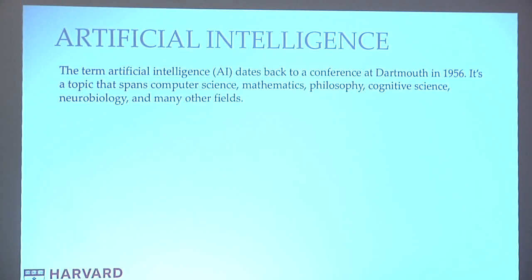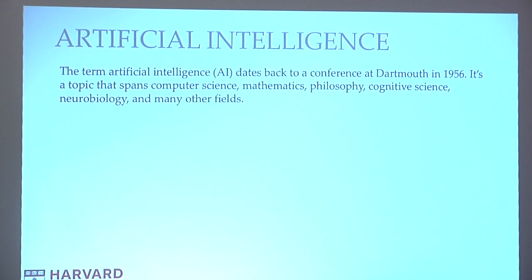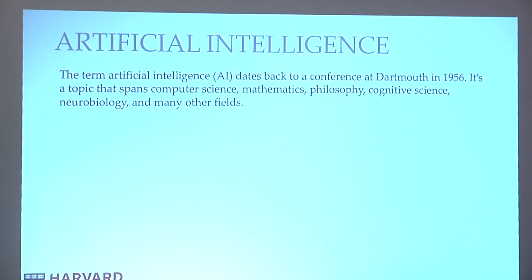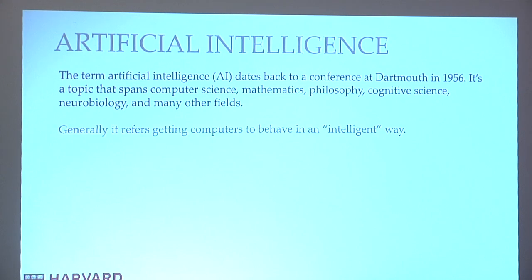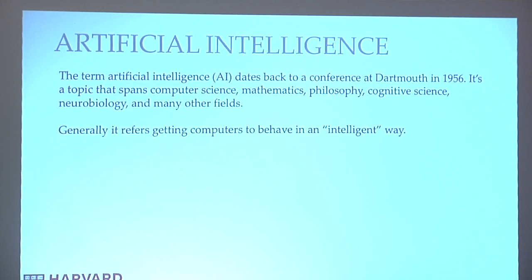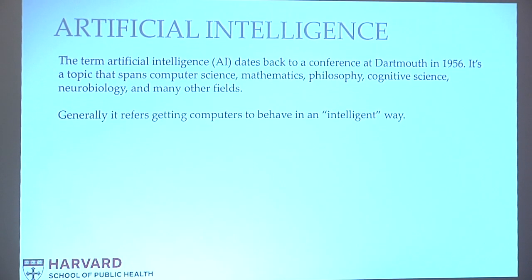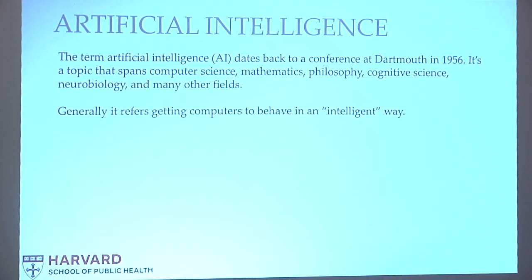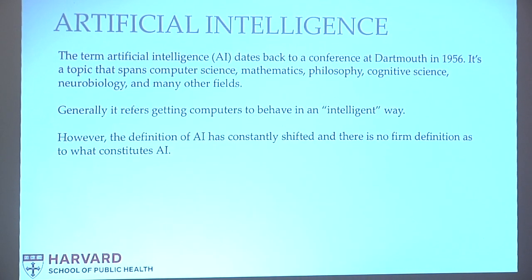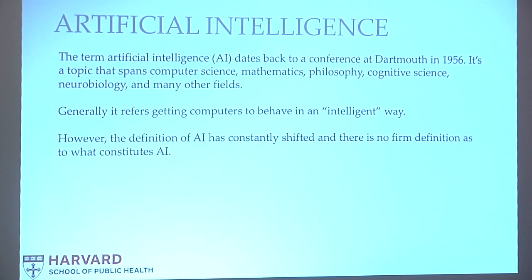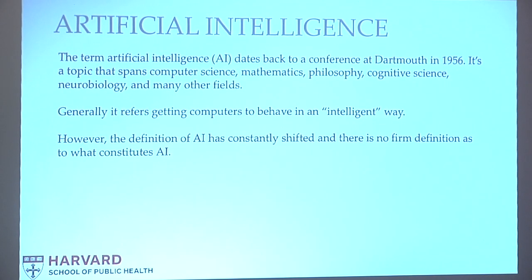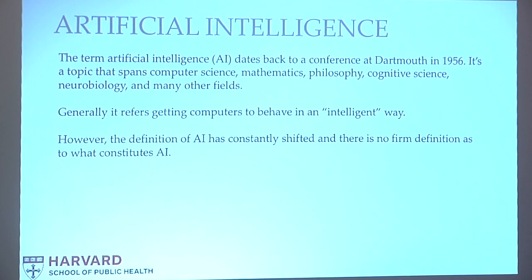Historically, AI has referred to this really broad, interesting intersection of mathematics, computer science, and philosophy. What it has historically meant is: can we get computers to behave in intelligent ways? Can we get computers to play chess? Can we get computers to recognize the contents of a photo? However, there's this constant tendency for AI to shift its definition, so what we mean by AI today doesn't necessarily match what we meant when we were talking about AI in the past.